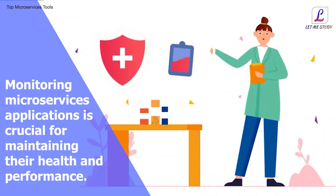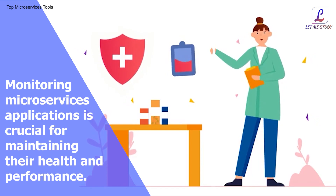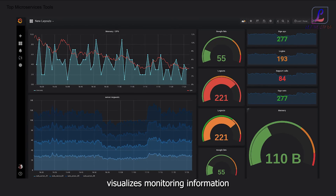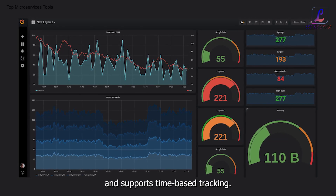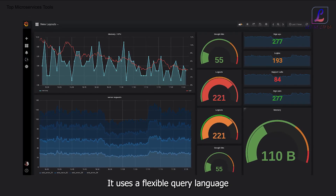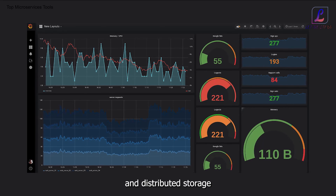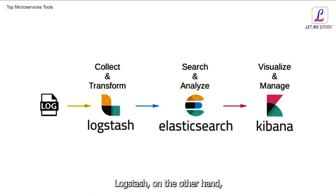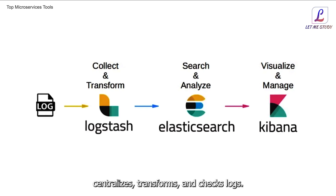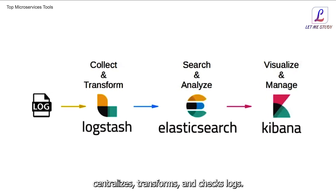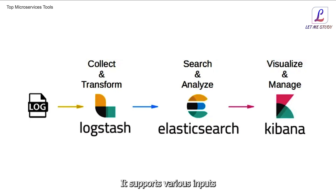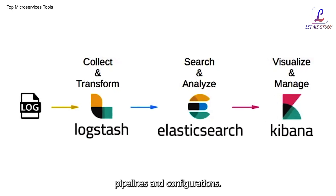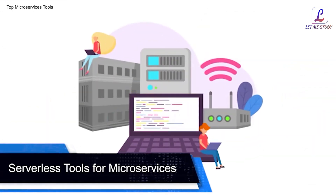Monitoring microservices applications is crucial for maintaining their health and performance. Prometheus, a monitoring tool, visualizes monitoring information and supports time-based tracking. It uses a flexible query language and distributed storage for gathering monitoring information. Logstash, on the other hand, centralizes, transforms, and checks logs. It supports various inputs and offers a plugin framework for creating customized pipelines and configurations.